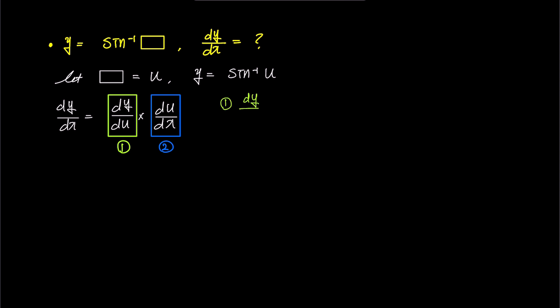To find dy over du, which is 1, we simply differentiate the previous expression with respect to u, utilizing our earlier result, 1 over square root 1 minus u squared.